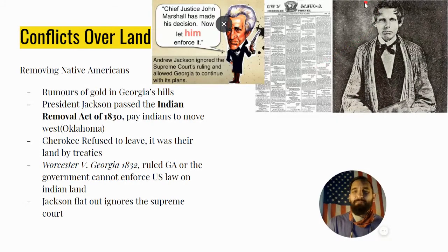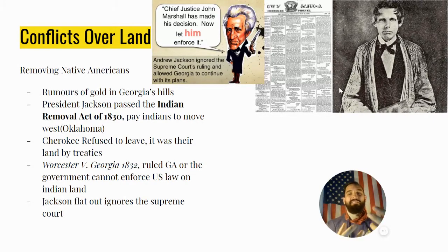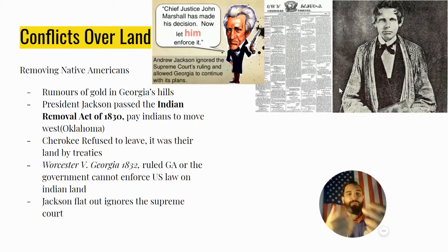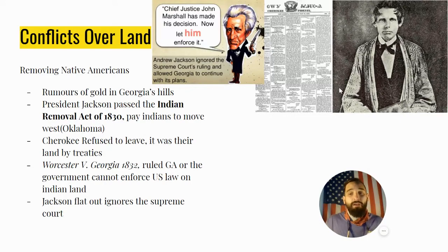Worcester versus Georgia went to the Supreme Court. Worcester was a missionary living with the Cherokees in Georgia. He helped them protest in court, arguing that Georgia had no right to remove these Indians since they were on their own land, granted by treaties from the American Revolution and War of 1812. The Supreme Court agreed. Chief Justice John Marshall said we cannot force U.S. laws in Cherokee Nation land. But Jackson flat out ignored him, saying 'Chief John Marshall has made his decision — now let him enforce it.' Jackson simply didn't care what the Supreme Court said.